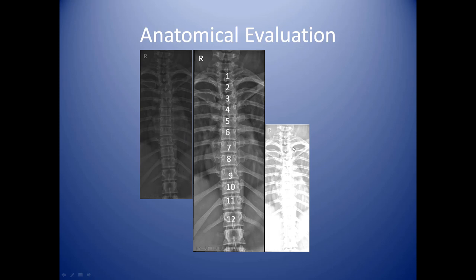We've darkened and lightened the same image so you can understand the appropriate technique. You want a black and white image where you can delineate the intervertebral disc spaces as well as the vertebrae themselves. When it's too dark, it's very difficult to determine where the vertebrae are, how to count them, and you can't see the bony formations clearly at all. You need to give the radiologist a chance to identify abnormalities, and you must be able to penetrate the vertebrae to see straight through, see the disc spaces, and count the appropriate vertebrae.